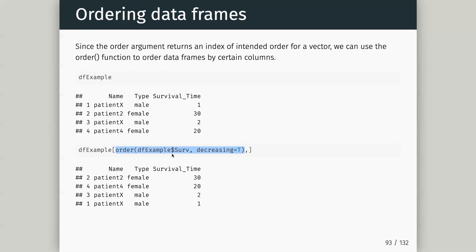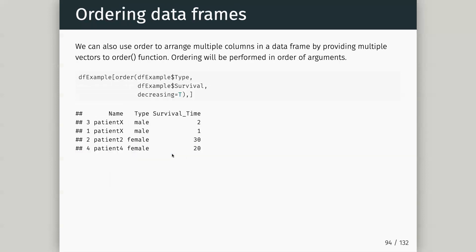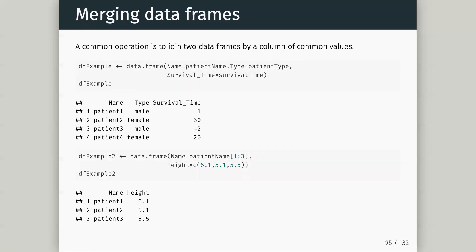You can also order by multiple columns — occasionally you'll have ties. Maybe I want to order within our type column first, male or female, and then order by survival within type. To do that I use order and give it the first variable I want to order by — type — and then within type I order by survival.